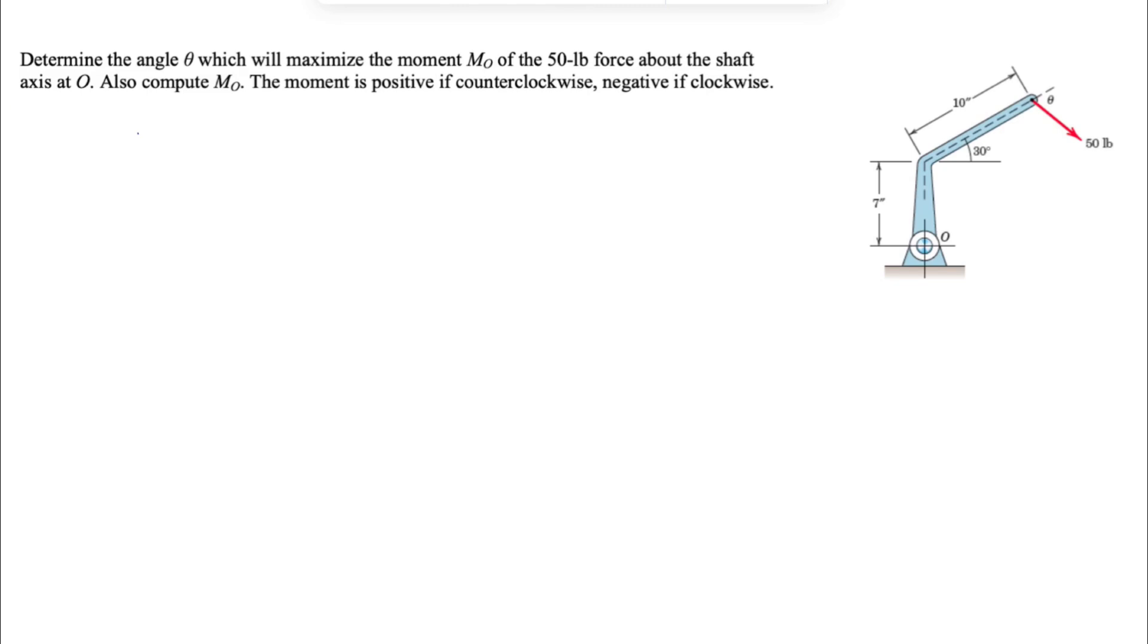If we get back to the definition of the moment, we have the cross product of R and F, position vector and the force, which would be basically R times F times sine of alpha. We're going to get the maximum for the moment when we have the value of sine of alpha equal to one. We know the sine of an angle can be maximum one.